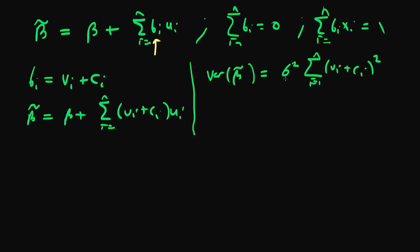So this is our variance of beta tilde. We can expand this so the variance of beta tilde equals sigma squared times the sum of vi squared plus 2 times the sum of vi ci plus the sum of ci squared.